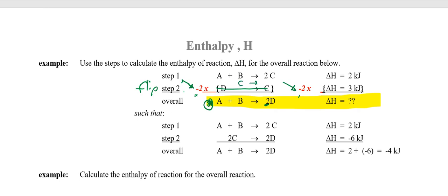So we get 2C and 2D and that will allow us to cancel out the Cs. And so A plus B is on the left. D is on the right. 2D is on the right. When we go to add this up, then we're not going to add up 3 kilojoules. We're going to add up 6 and 2 plus negative 6 makes negative 4 kilojoules. Always pay attention to your signs.